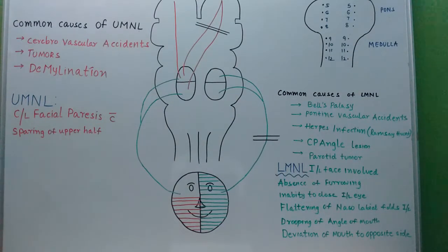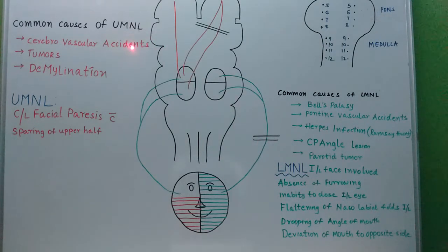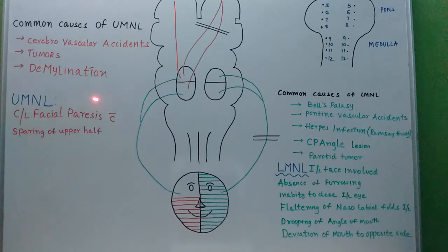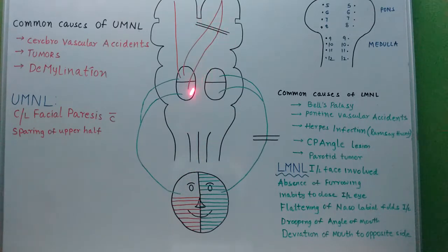Common causes for upper motor neuron lesions are cerebrovascular accident, tumours, and demyelination. In upper motor neuron lesions, facial paresis occurs contralaterally with sparing of the upper half. This is a very important statement to note.